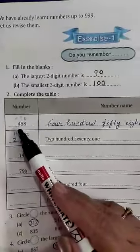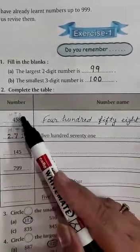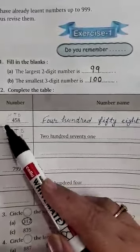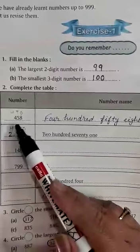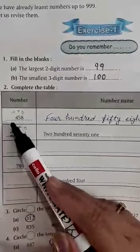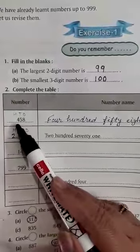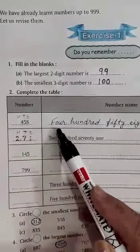First of all, see this number, write down the symbols: 1s, 10s, 100. Now, we will write the number name. On 100 place, there is 4. So, what is the number name? 4 hundred.